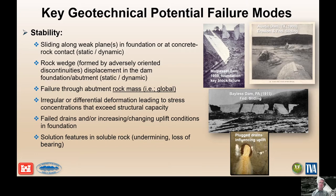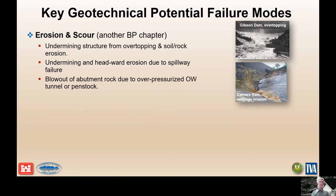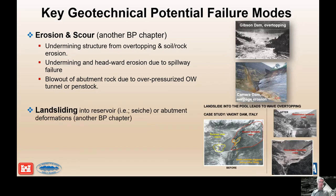Those are the prime geotechnical failure modes related to stability, but we can also have erosion and scour related to water flow. This is covered in another best practice chapter, but some of these issues might involve undermining the structure from overtopping, erosion of soil and rock in the abutments, headward head-cutting due to spillway failure, or blowout of the abutment rock due to an overpressurized outlet works tunnel or penstocks. There's also a potential failure mode related to landsliding into the reservoir, covered in another best practice chapter.